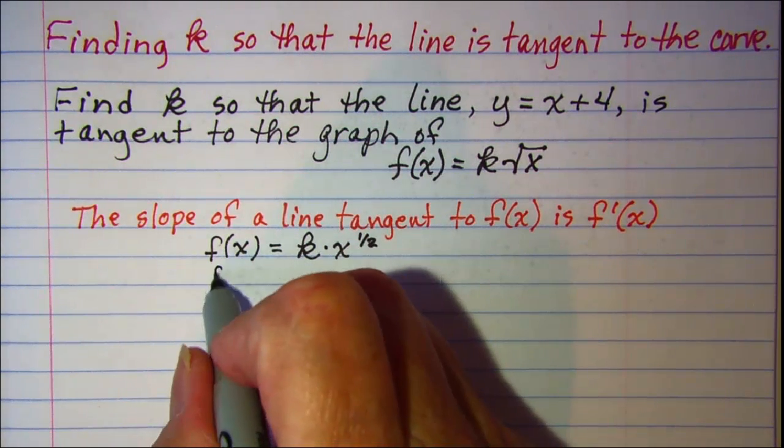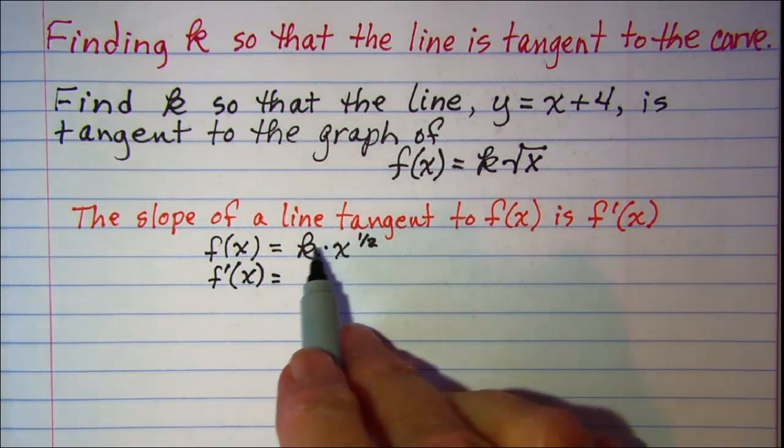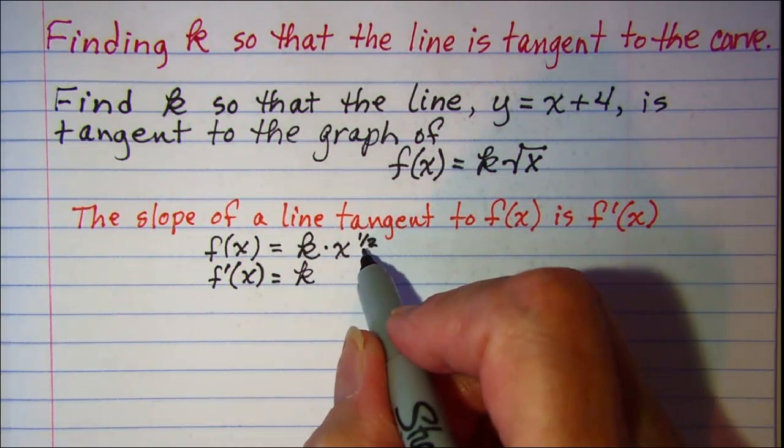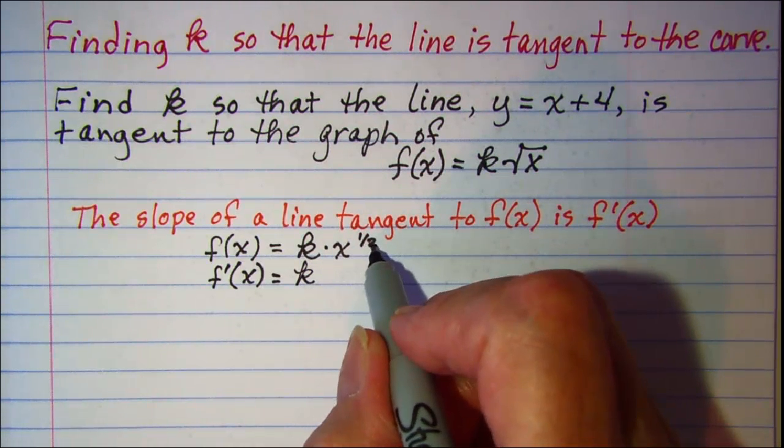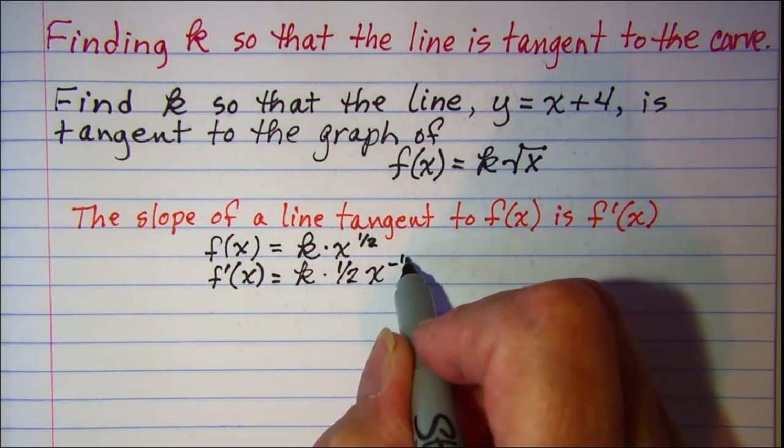The derivative of k will be a constant so we'll just multiply by k, and then the derivative of x to the one half is one half x to the negative one half.